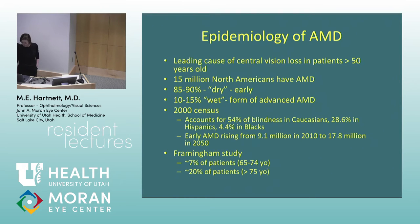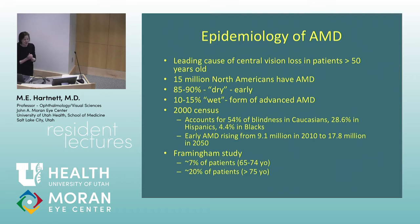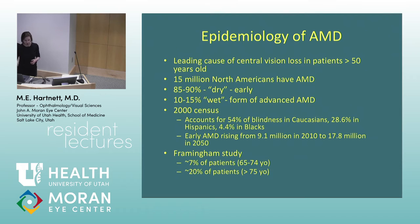AMD is more common in Caucasians, but Asians, African Americans, and Hispanics can get a form of neovascular AMD called polypoidal choroidal vasculopathy, which is getting a new name. It's associated with bleeding in the outer retina, hypertension, and polyps associated with the choroid and pachychoroid. The distinctions are still not entirely clear.